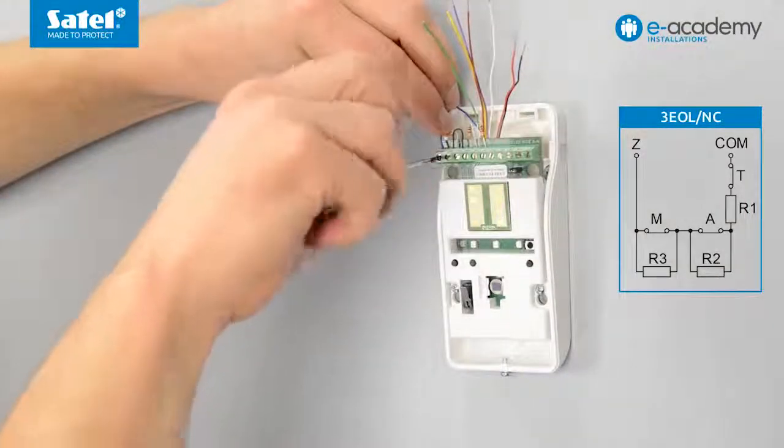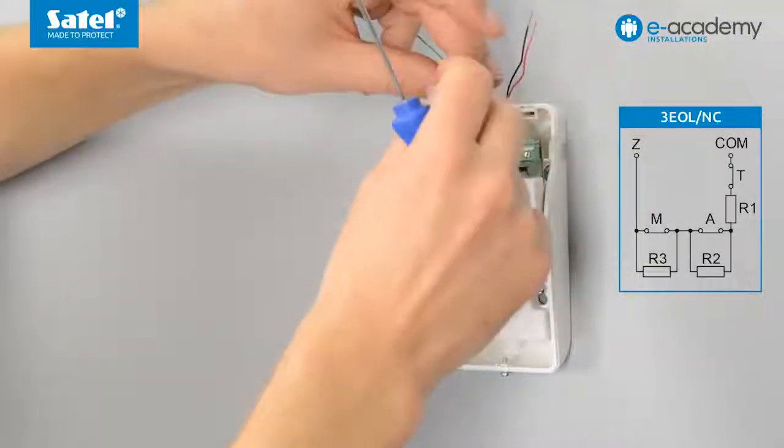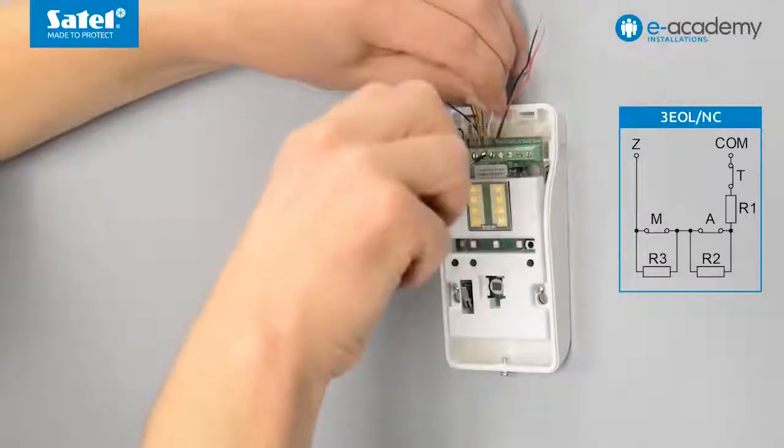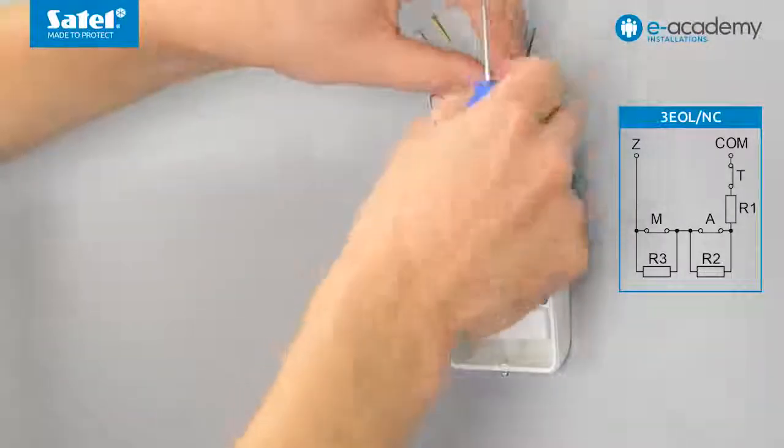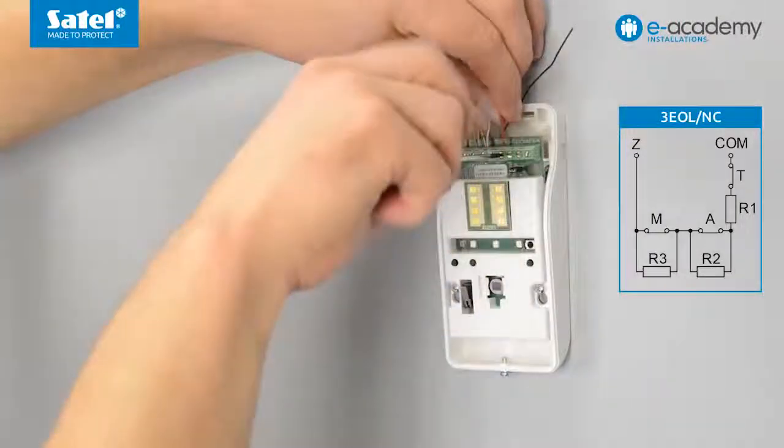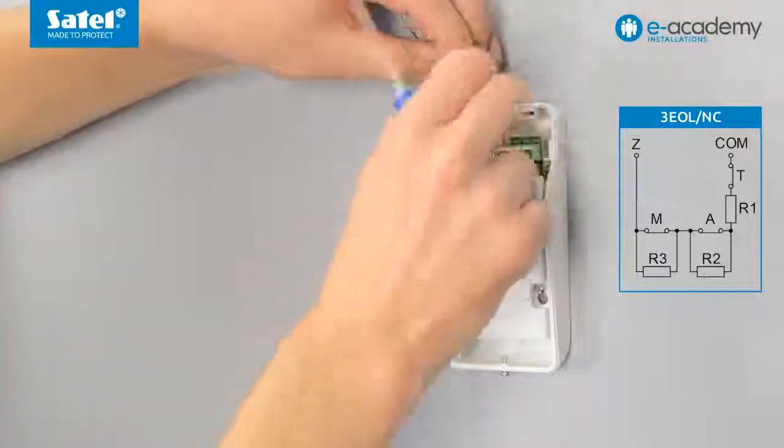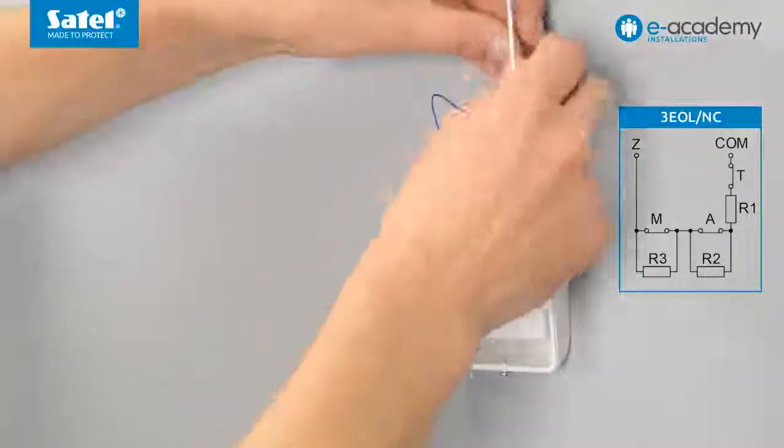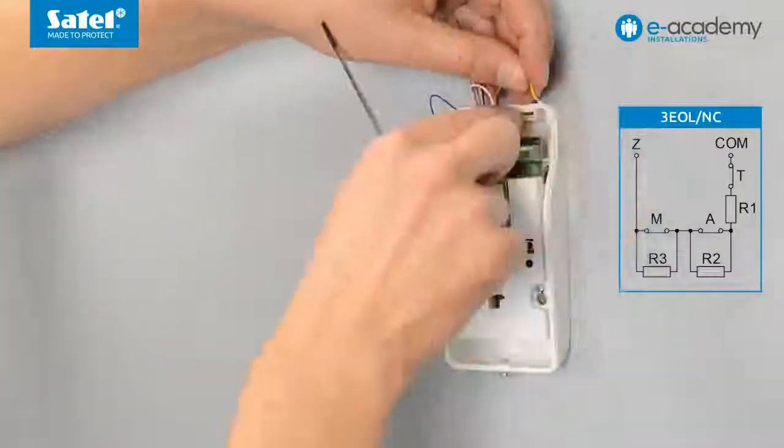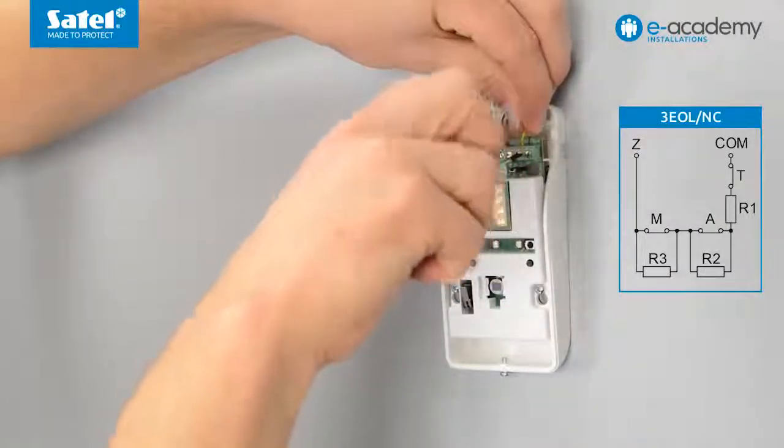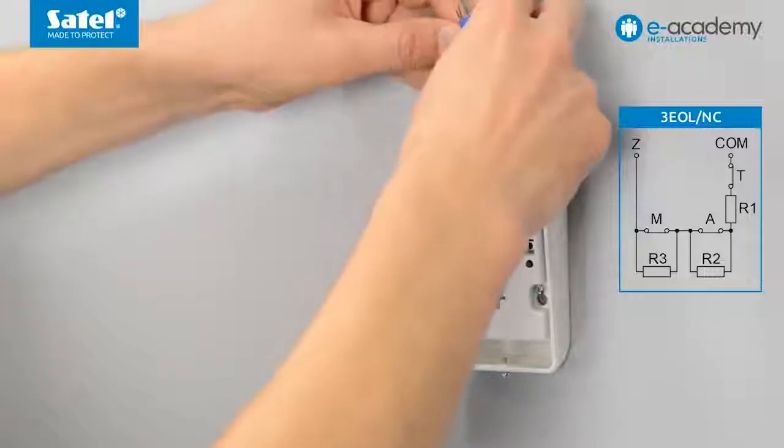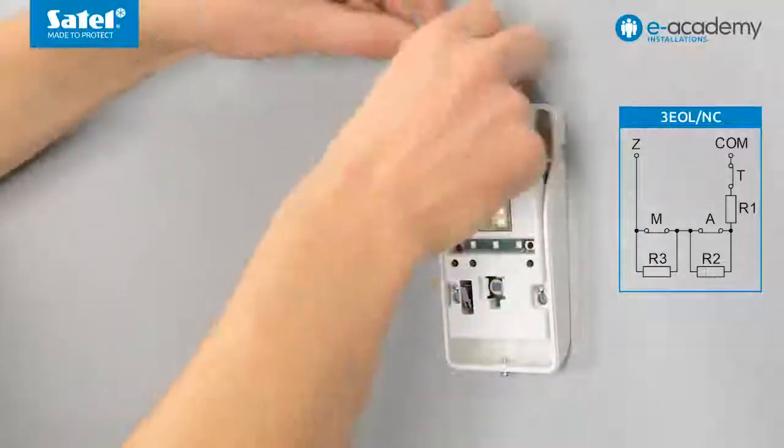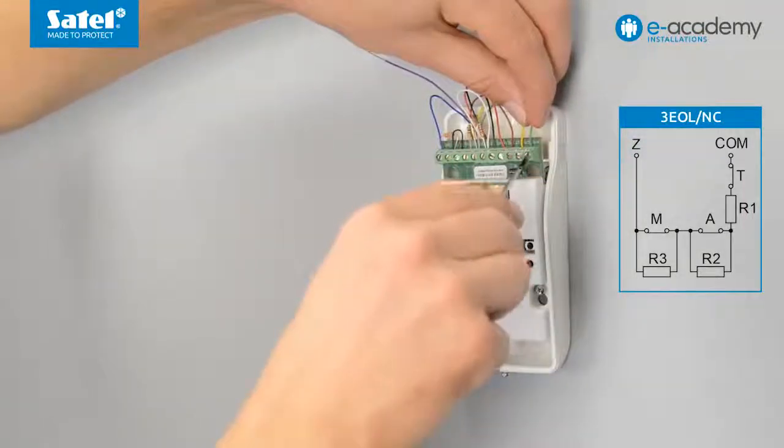Connect the common ground cable. Connect the lead running to the control panel input. Connect power plus 12 volts and common ground. Connect the dusk sensor output.